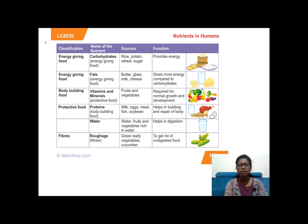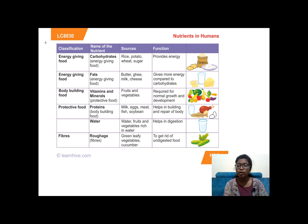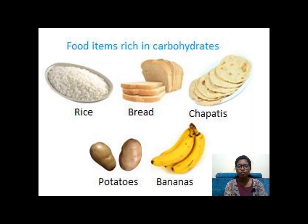Water is very important. When you eat a lot of fruits and vegetables, water content is present in them, which helps in digestion. We have to drink a lot of water. Fibers, also called roughage — green leafy vegetables, fruits, and whole grains are the sources. They help us to get rid of undigested food.